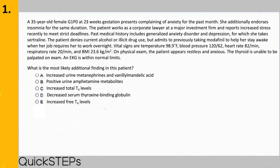Now let's go through the entire question and highlight key words. A 35-year-old female, G1P0 at 23 weeks gestation, presents complaining of anxiety for the past month. She additionally endorses insomnia for the same duration. The patient works as a corporate lawyer and reports increased stress recently to meet strict deadlines. Past medical history includes generalized anxiety disorder and depression, for which she takes sertraline. The patient denies current alcohol or illicit drug use but admits to previously taking modafinil to help her stay awake when her job requires her to work overnight.